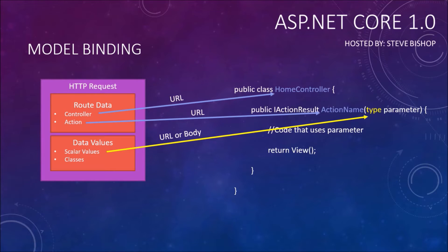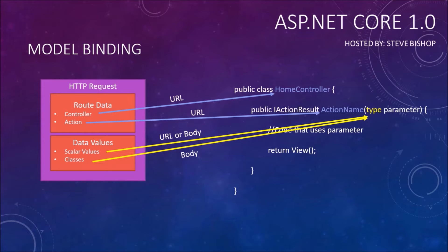If you're going to pass an entire class, you'll want to do it through the body of your HTTP request. It's not something you pass along in the URL because classes are typically going to have more than just one single property — they're going to have multiple properties.